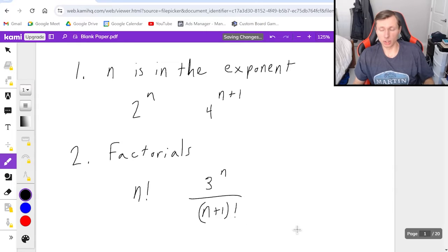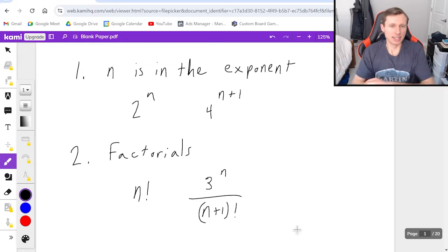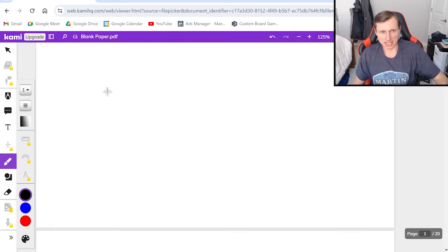Ratio test is going to work really well for this. As a matter of fact it's probably the only test you can use to prove factorials converge or diverge except for maybe the direct comparison test, but that is terrible if you're doing that. So now let's talk about how we use the ratio test.